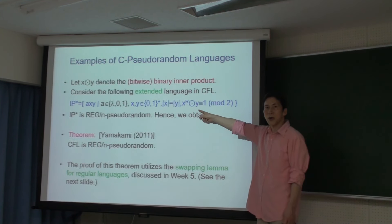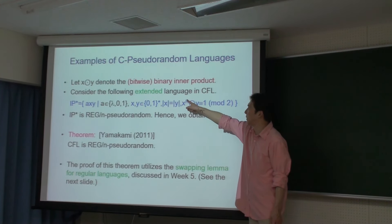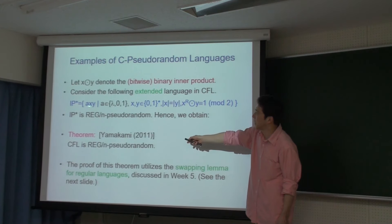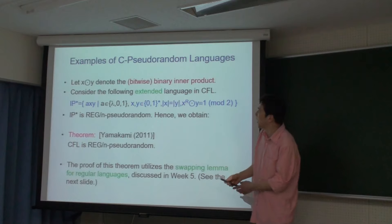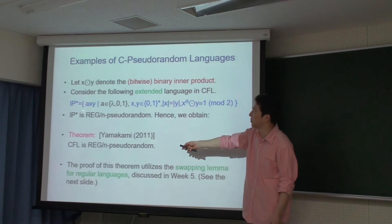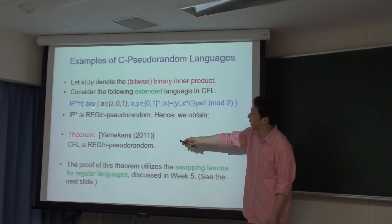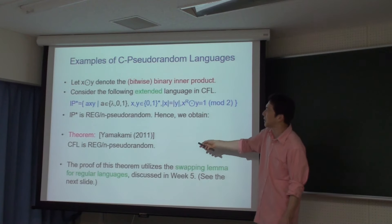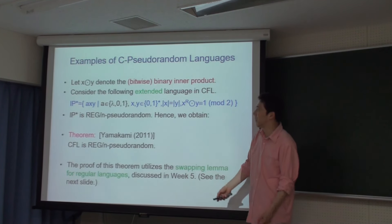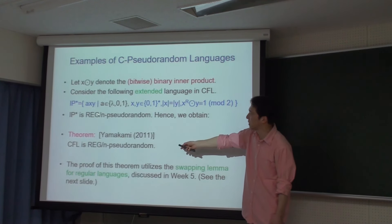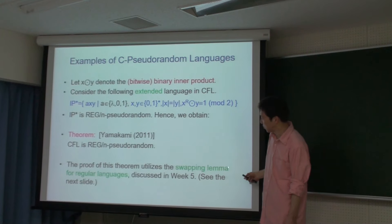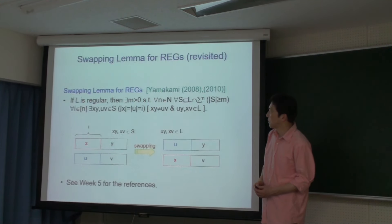NPがC数度ランダムになるかどうかは未解決問題です。具体的な例として IP* という言語を考えます。これはXとYというゼロイチのビット列で、Xのリバースと Yのbitwise内積をmod 2したとき奇数であるもの（長さ調整のためにAというビットを加える）です。このIP*はレギュラースラッシュエンドの数度ランダムになることが正面山下によって証明されています。証明にはSwapping Lemmaを使います。